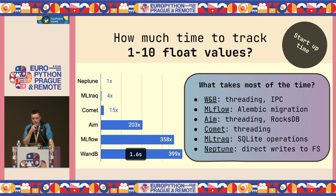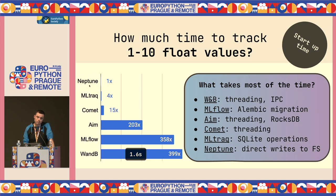In the first experiment, we try to track just one to ten floats. Looking at the average results, the best performing framework is Neptune and the slowest is Weights & Biases, taking 1.6 seconds just to start — 399 times slower than the fastest one. Between the slowest and fastest, there's a difference of 400 times, which is quite significant.